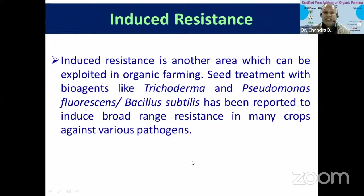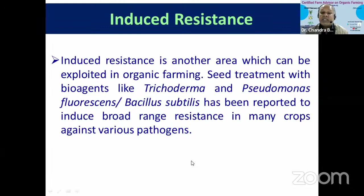Induced resistance: even susceptible varieties can be made resistant by applying biocontrol agents. Many strains of Trichoderma, Pseudomonas, and Bacillus subtilis induce the inbuilt resistance genes of crops when applied. Once inbuilt resistance genes are activated by these bioagents, even susceptible varieties behave like resistant ones and do not get infected by different pests or pathogens.